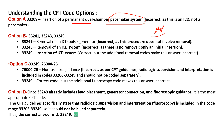Option B includes codes 33241, 33243, and 33249, which are all about removal and replacement. You use option B codes when they remove and then replace the system. But in our question they are not removing — instead they are inserting. Option C has 33249 and 76000 with modifier 26. Code 76000 is radiologic supervision and guidance.